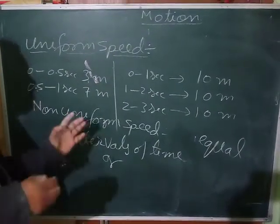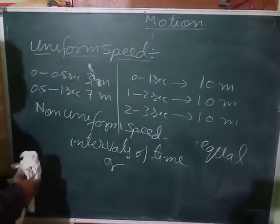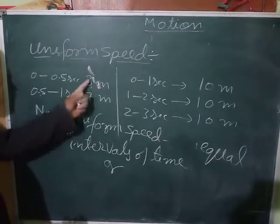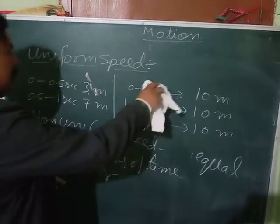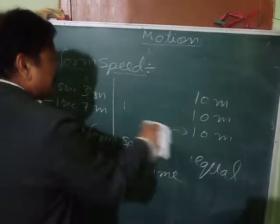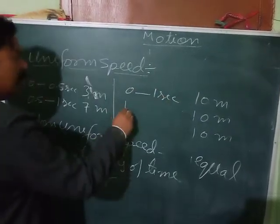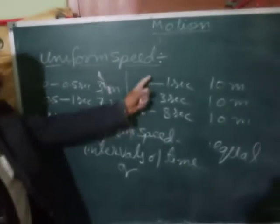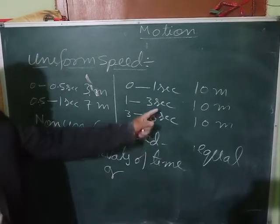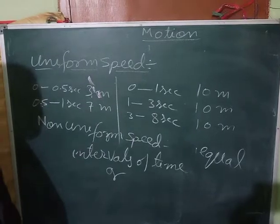For example, if a body covers equal distance of 10 meters each time, but in unequal intervals — 0 to 1 second, 1 to 3 seconds, 3 to 8 seconds — the time intervals are not equal, so even though distance is equal, this is also non-uniform speed. These are the two cases of non-uniform speed.